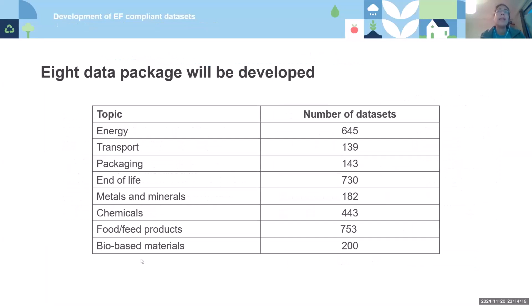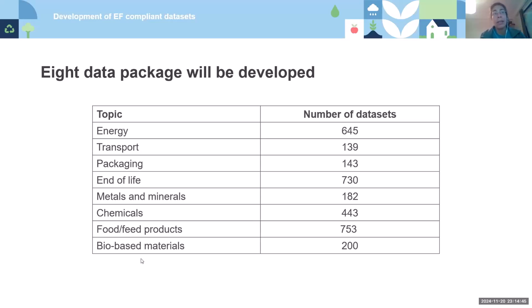The types of datasets being developed focus on those essential for all product footprint studies: energy, transport, packaging, and end of life. Additionally, there are datasets for fields with high demand such as metals, minerals, chemicals, food, and bio-based materials. The updated list will be published soon.